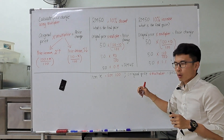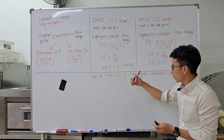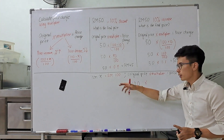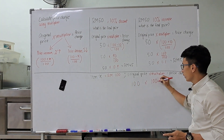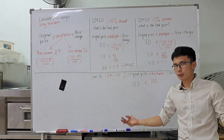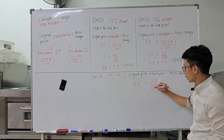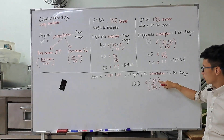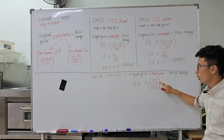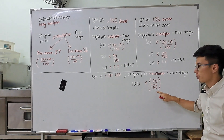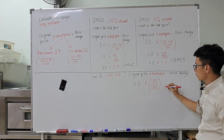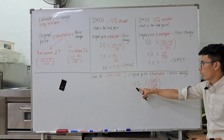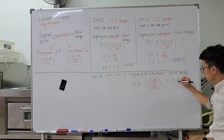So my price here is 100 ringgit — that is my 100 percent value. When we talk about percentage, the maximum we can get is 100. So this price of 100 ringgit is my 100 percent value, and the maximum percentage is 100. This cancels out to become one, and 100 multiplied by one gives you 100.